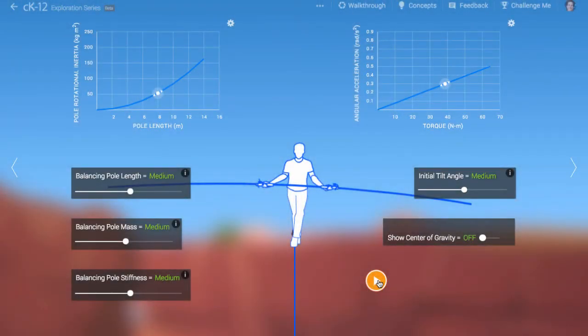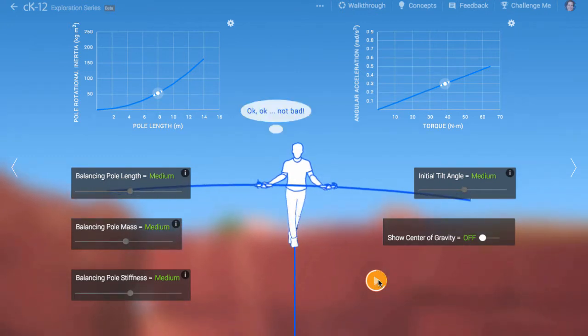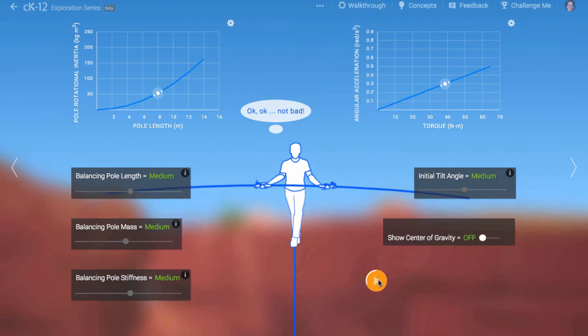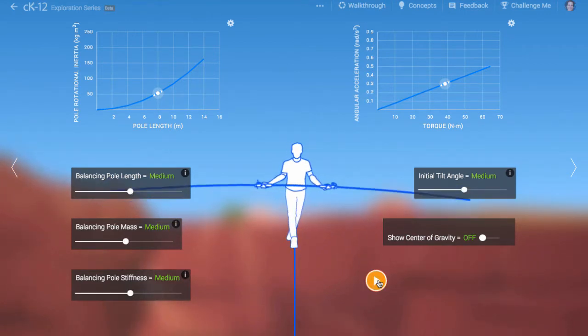The key point of this simulation is that the tightrope walker has some minimum reaction time. This means he can adjust to problems, but only if those problems arise slowly rather than quickly.